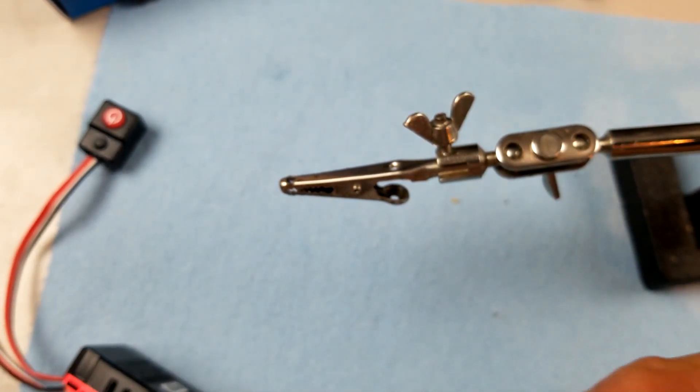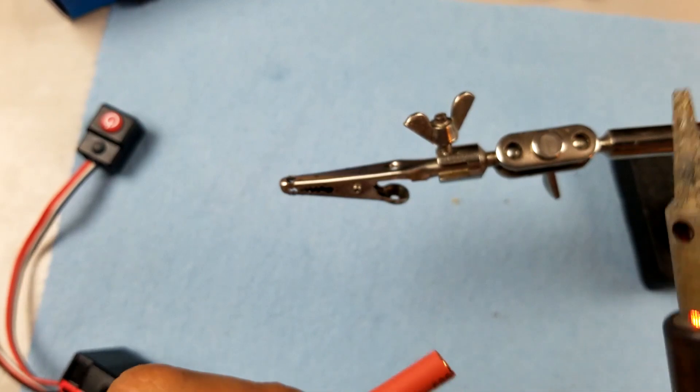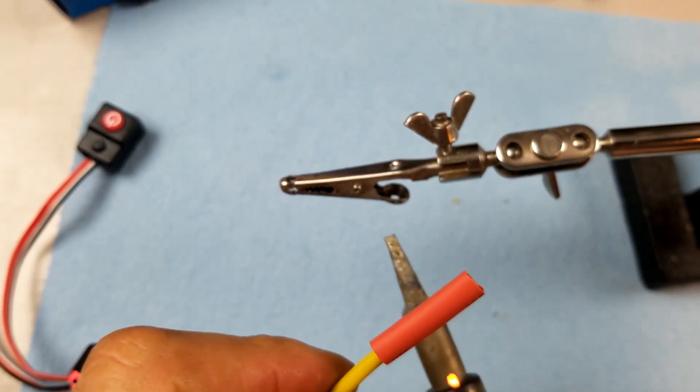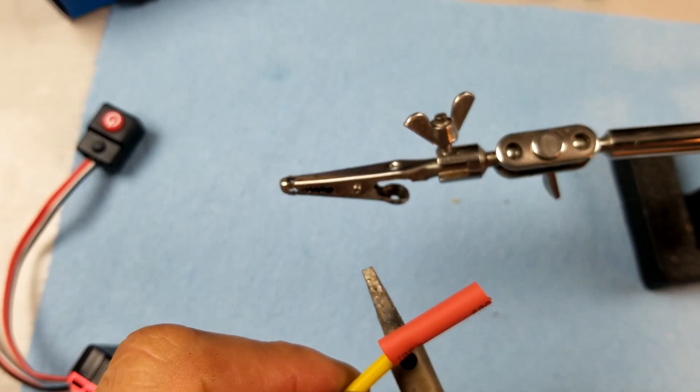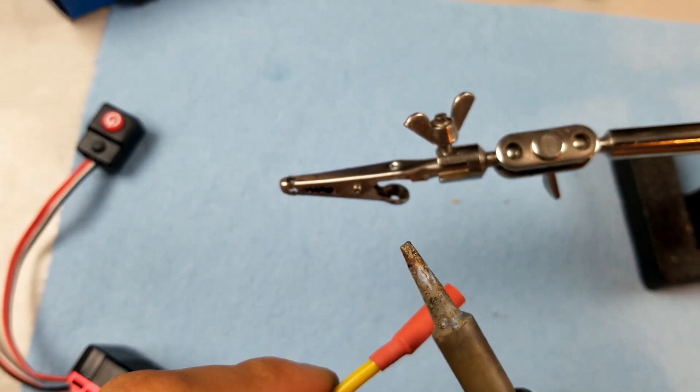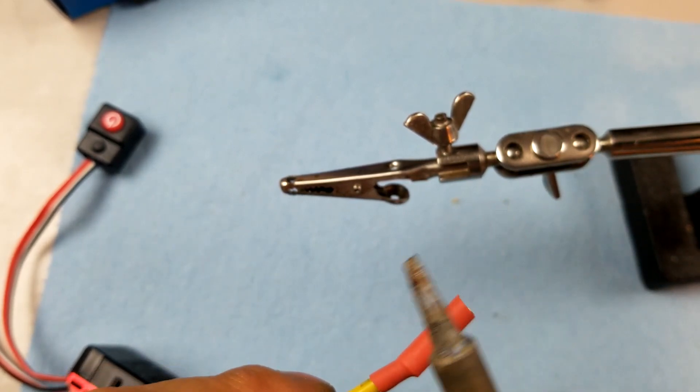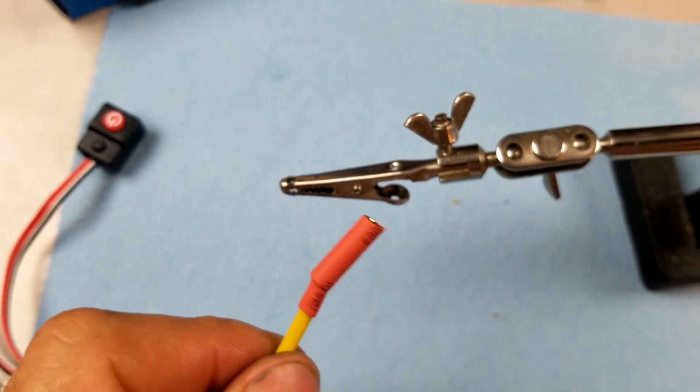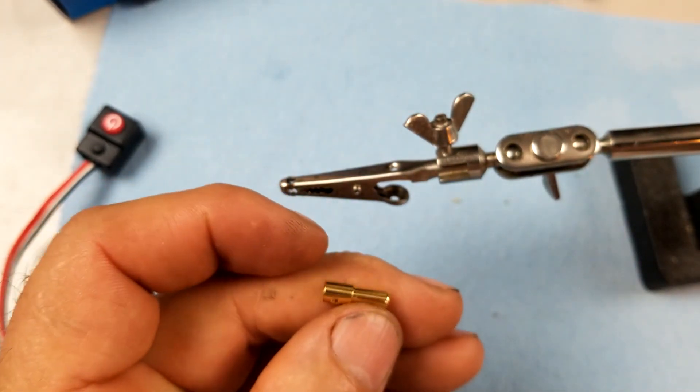Now I can do the other one. It should be cooled down a little bit, even if it's not doesn't matter. Slide the heat shrink on it and now I can just heat it up. Just like that both of them are done.